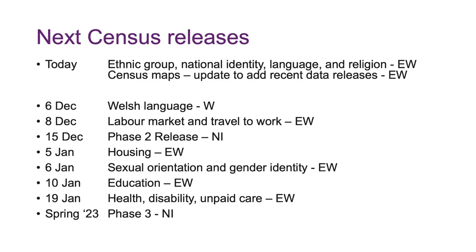Today we've had a release from ONS for England and Wales on ethnic group, national identity, language, and religion, plus updates to the census maps. We've got a very busy December — Welsh language, labour market, and travel to work releases from ONS. Northern Ireland's phase two covers health, disability, unpaid care, housing, and accommodation. Their phase three covers marital status, household composition, living arrangements, sexual orientation, qualifications, labour market, and communal establishments — going to spring 2023.